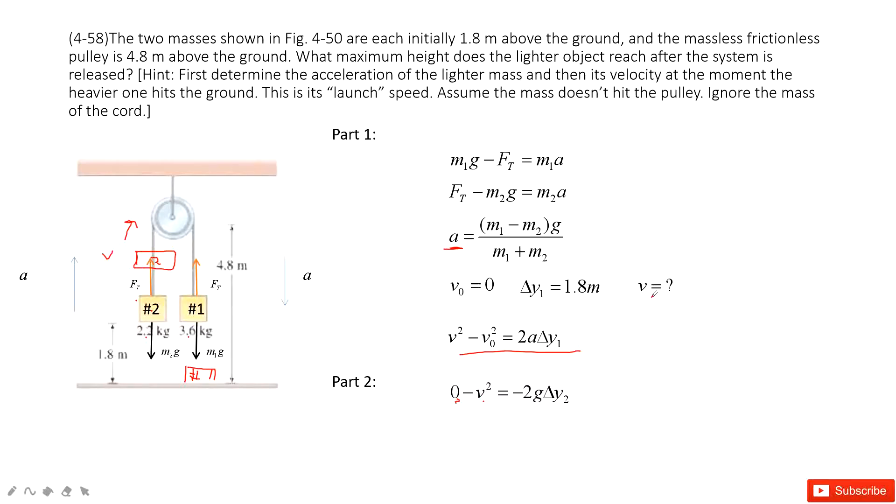And then, the initial velocity for this case is this velocity we found. And then, the displacement moved is the next one. How much it moved? Acceleration is negative g. In this equation, we can find the delta y2.